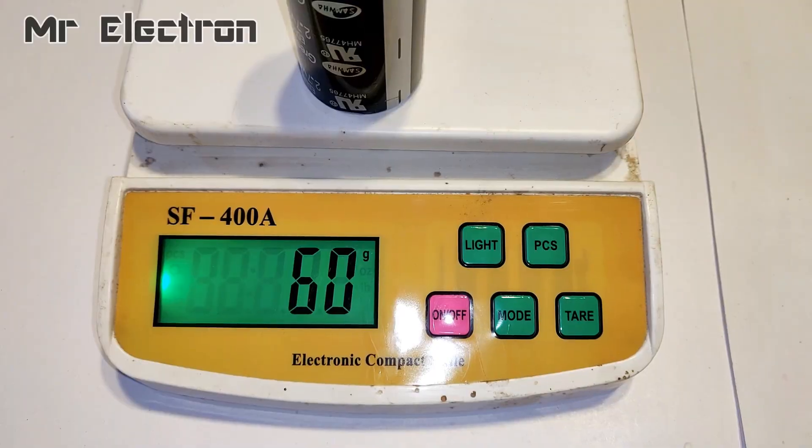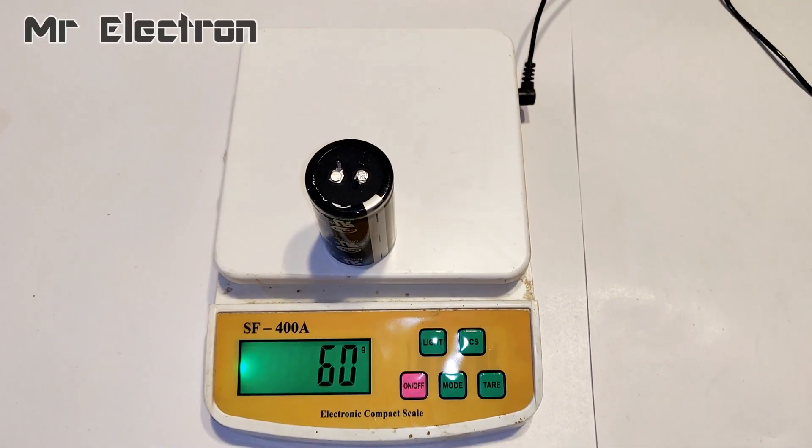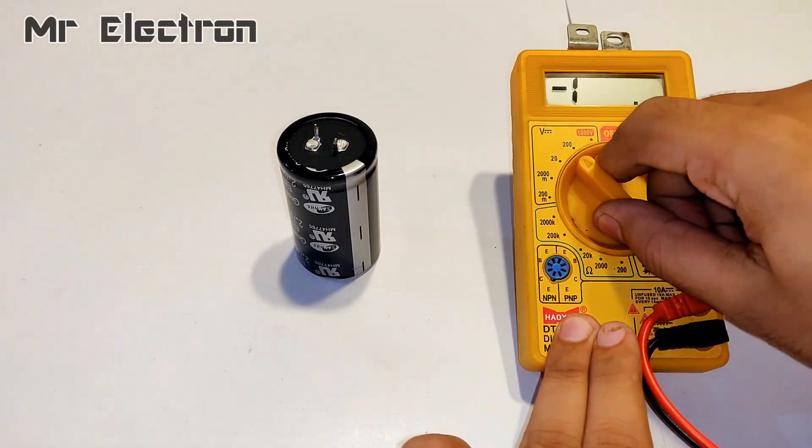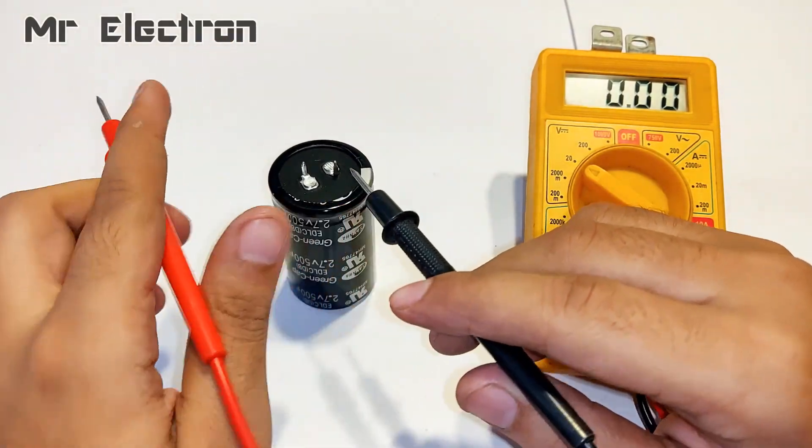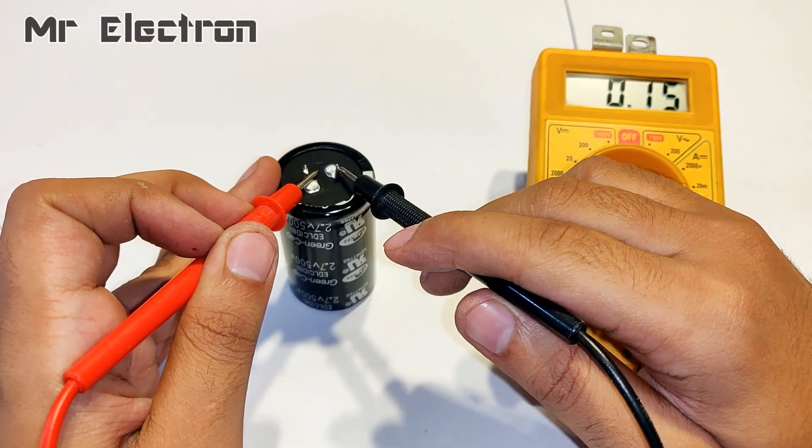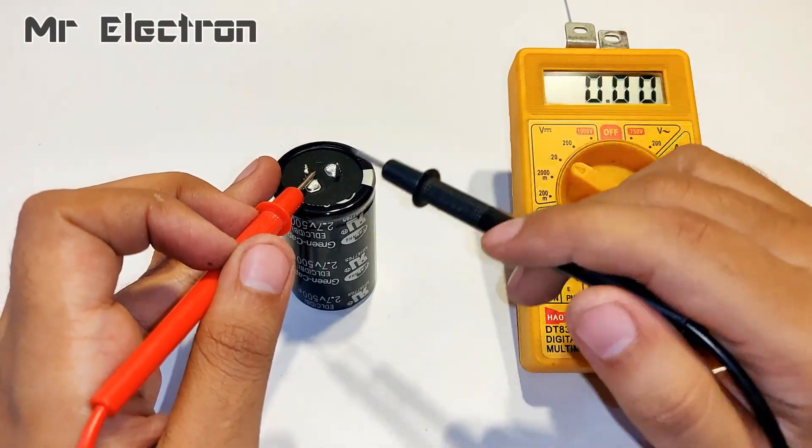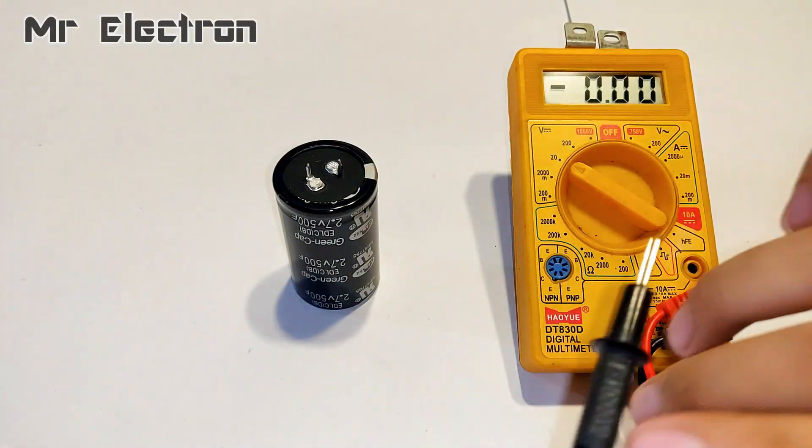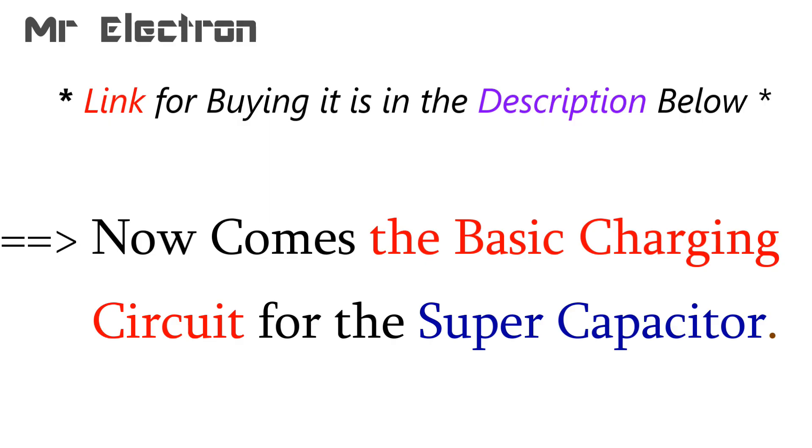Its weight as you can see is 60 grams and now I'm going to check the voltage across it although I have not charged it yet. You can see that it must have been charged before for checking purposes and it has still 0.15 volts on it.